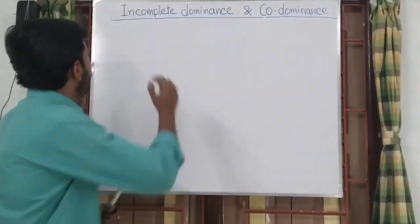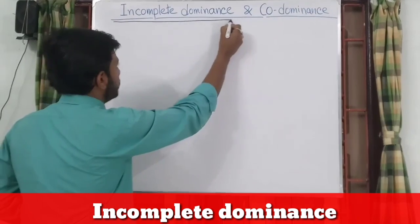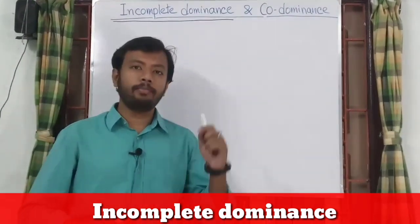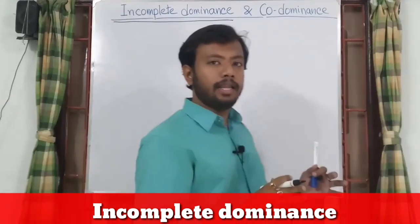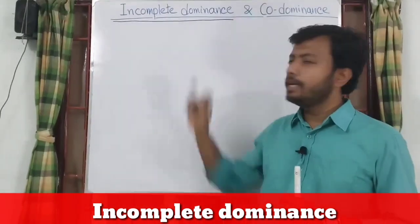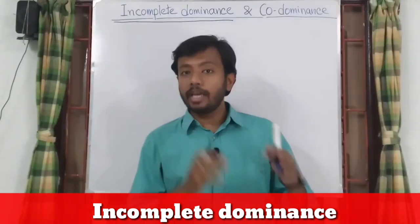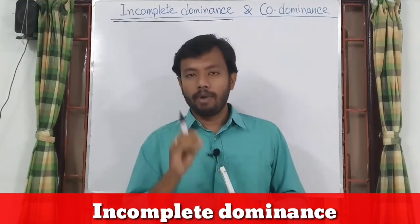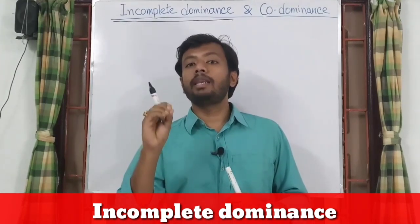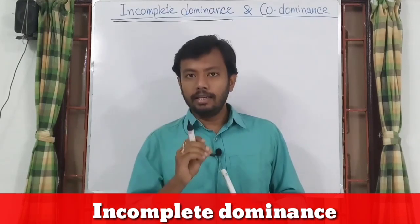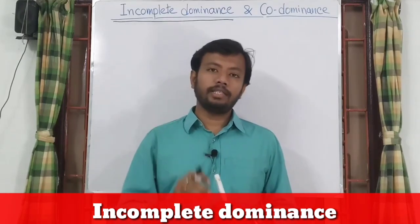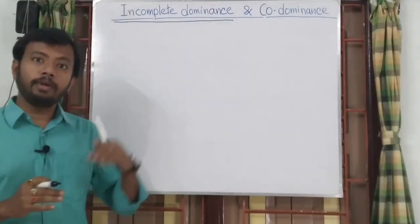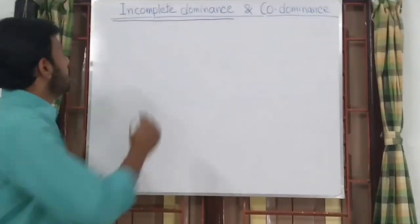Let's start with the definition of incomplete dominance. Its proper definition is given in the description box, but for our simple understanding: when in any heterozygous organism the dominant allele cannot suppress or mask the effect of the recessive allele completely, such kind of dominance is known as incomplete dominance. That means the dominant allele cannot express itself completely.